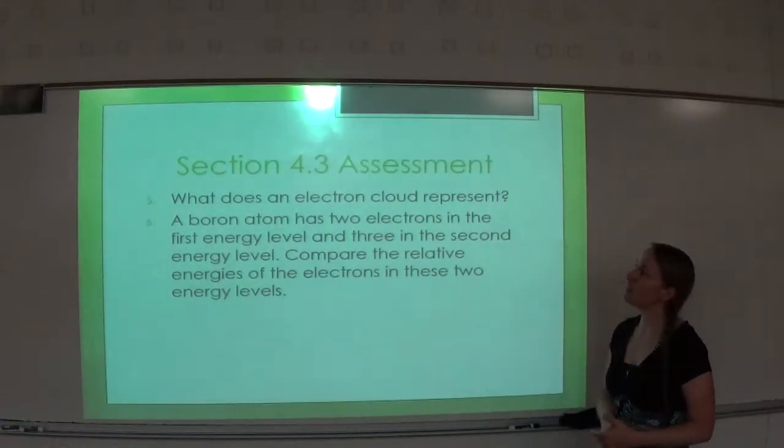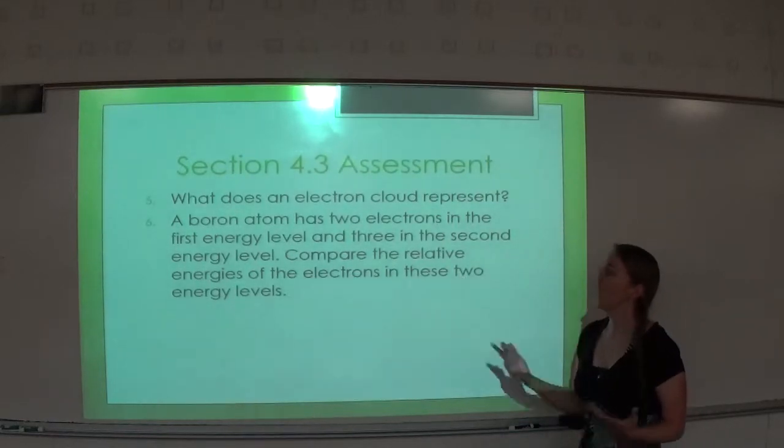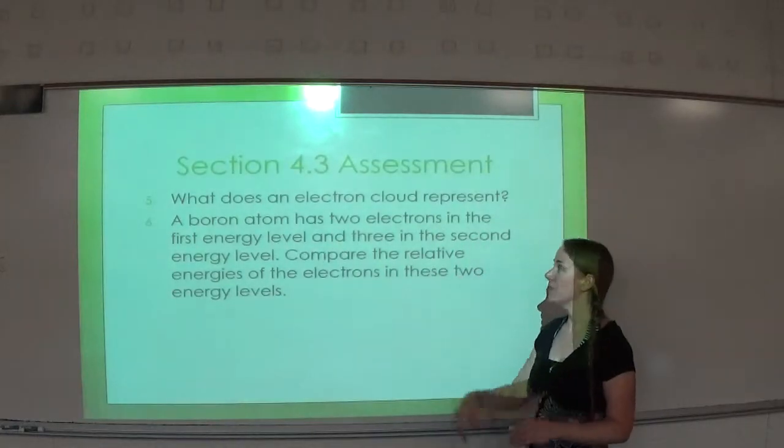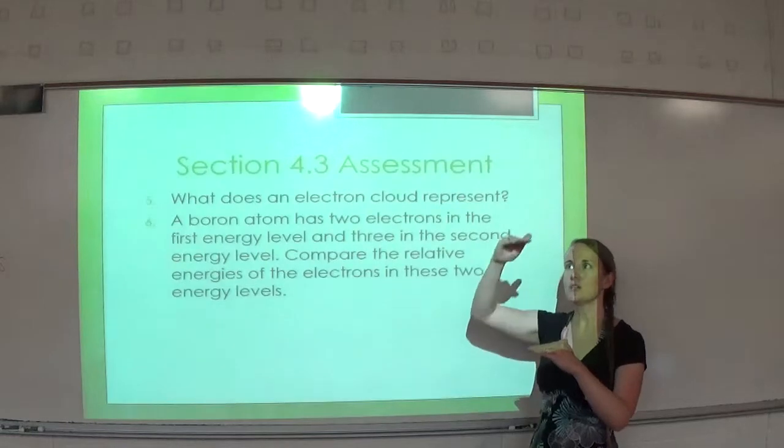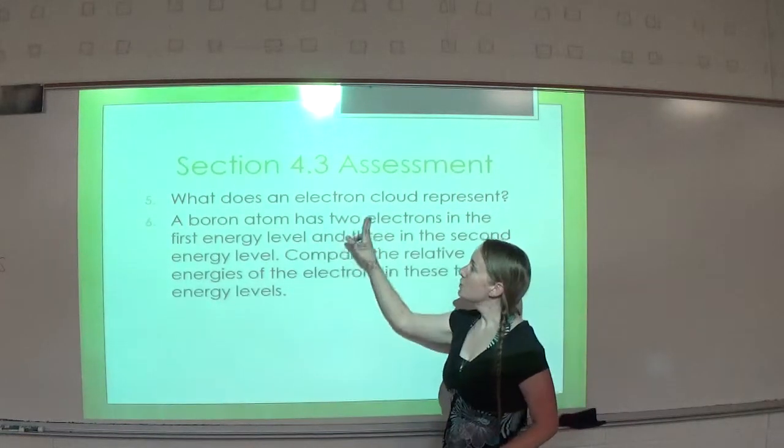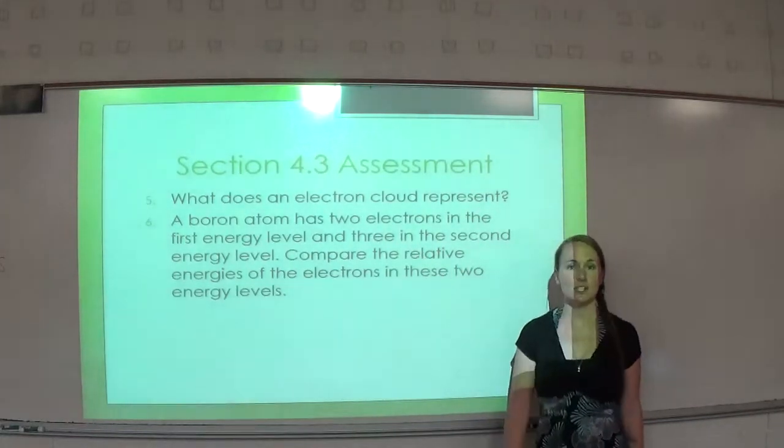Number six, a boron atom has two electrons in the first energy level and three in the second energy level. Compare the relative energies of the electrons in these two energy levels. Well, the two electrons in the first energy level would have a lower energy than the three in the second. Because as you go up an energy level, those electrons have to have more energy. You can just say the two electrons in the first energy level have less energy than the three electrons in the second energy level.